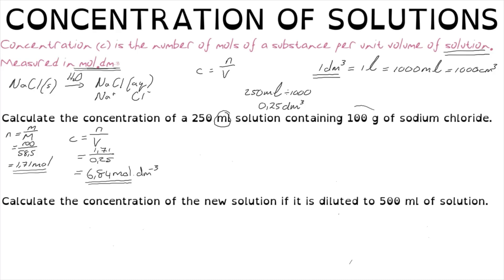It's important to note that when we dissolve one substance in another — such as 100 grams of sodium chloride in water — that does not affect the volume. The reason is that the substance will ionise or dissociate and form part of the solution; it does not increase the volume of the solution.